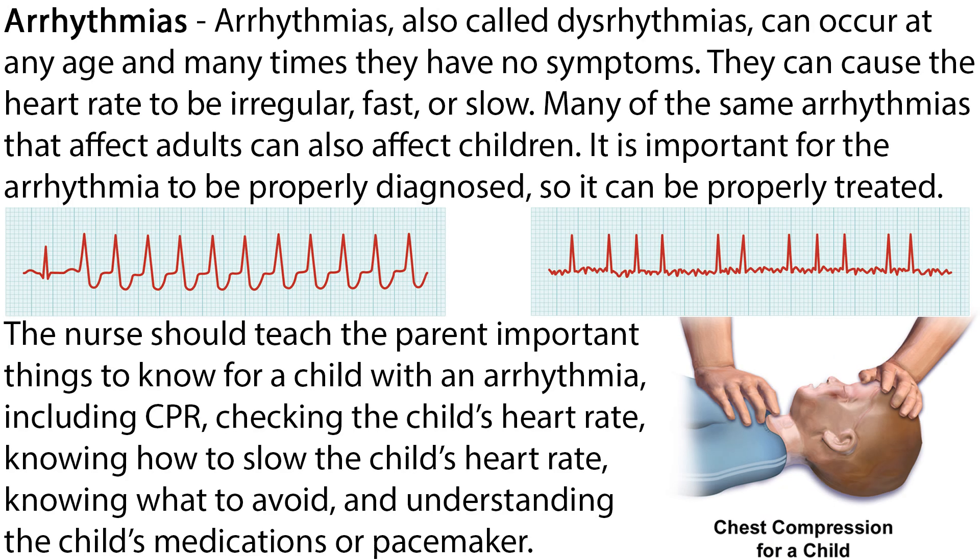Arrhythmias, also called dysrhythmias, can occur at any age and many times have no symptoms. They can cause the heart rate to be irregular, fast, or slow. Many of the same arrhythmias that affect adults can also affect children. It is important for the arrhythmia to be properly diagnosed so it can be properly treated. The nurse should teach the parent important things including CPR, checking the child's heart rate, knowing how to slow the child's heart rate, knowing what to avoid, and understanding the child's medications or pacemaker.